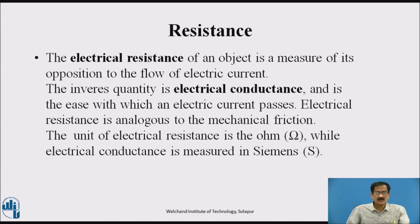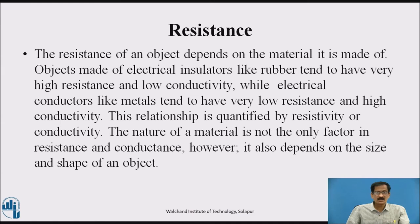Resistance: the electrical resistance of an object is a measure of its opposition to the flow of electric current. The inverse quantity is electrical conductance, which is the ease with which an electric current passes. Electrical resistance is analogous to mechanical friction. The unit of electrical resistance is the ohm, while electrical conductance is measured in Siemens. Objects made of electrical insulators like rubber tend to have very high resistance and low conductivity.